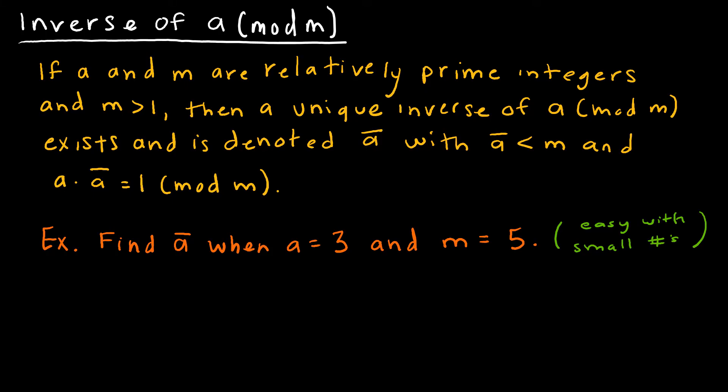This is just finding the inverse. If A and M are relatively prime, and you'll recall that means they don't have any factors in common, and M is greater than 1, then a unique inverse of A (mod M) exists and is denoted with the A̅, where obviously A̅ is less than M. The most important part is A times A̅ ≡ 1 (mod M), which is why we want to find it.